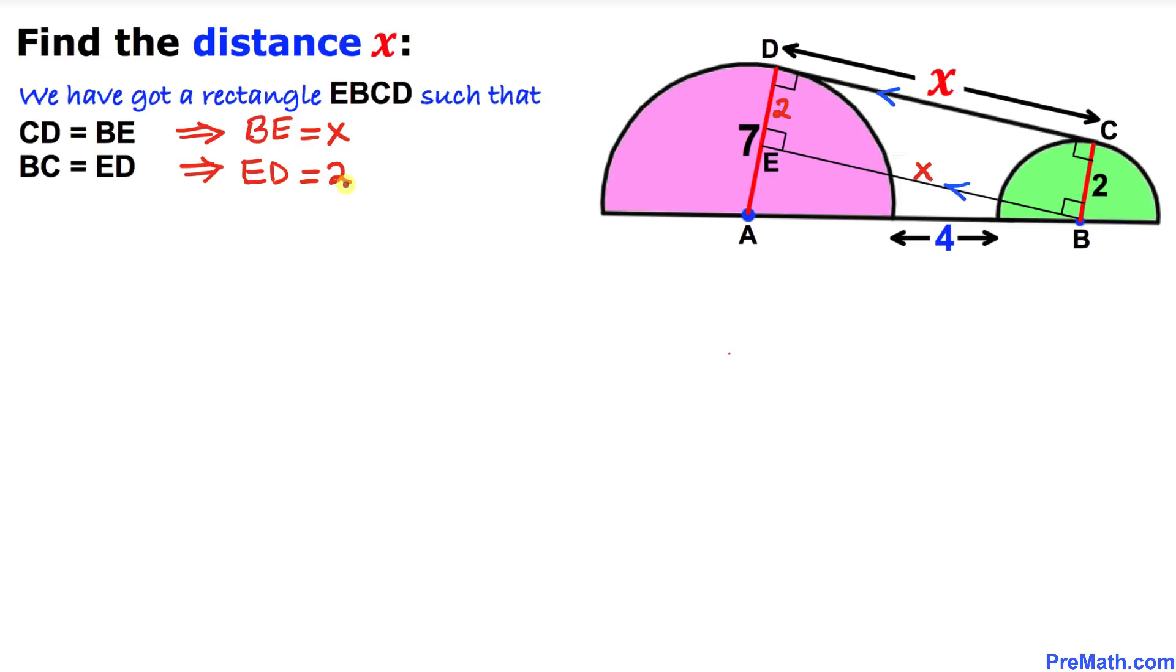Now let's focus on this circle. Let's focus on this radius of this purple semicircle. We know that this whole radius is 7, and this distance is 2 units. So this has got to be 7 minus 2 which is 5. So therefore this AE distance is going to be 5 units.